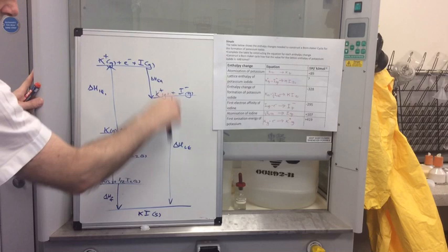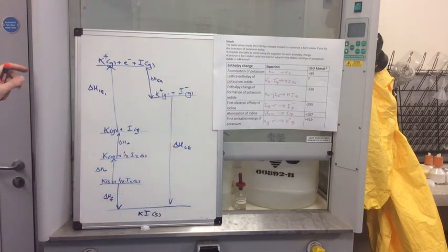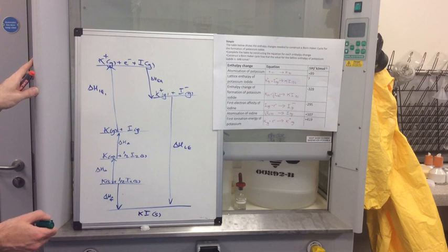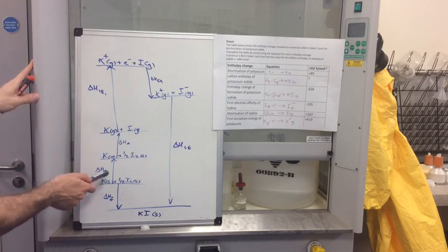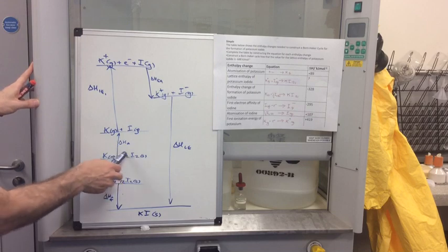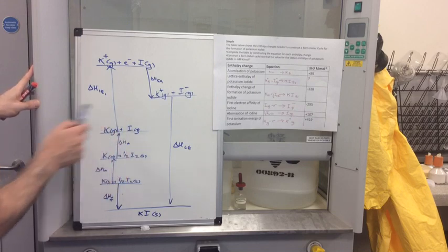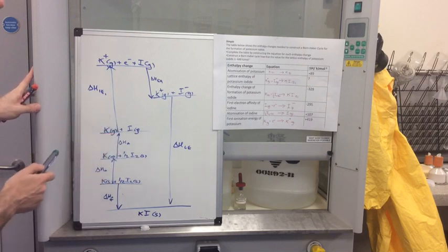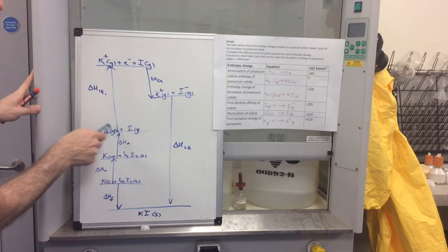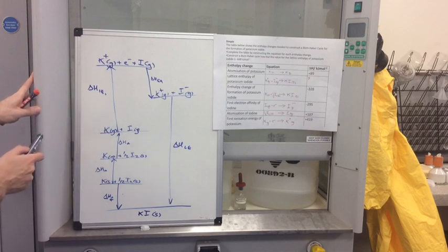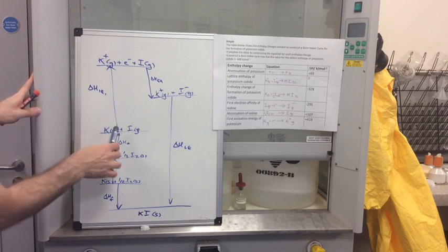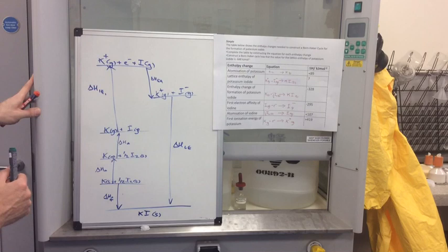All the rest, obviously this lattice enthalpy is always exothermic, so that has to point down. These three here are all endothermic processes. So to turn the solid into a gas you have to put energy in. To break that covalent bond and turn the I2 molecule into a gaseous atom, you've got to put energy in, so that's endothermic as well. And to remove that electron from the attraction in the atom, we've got to add energy, put energy in.